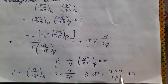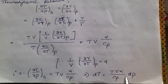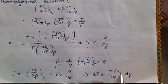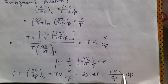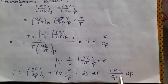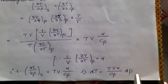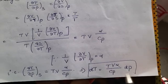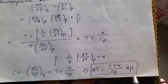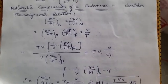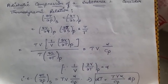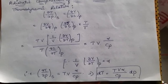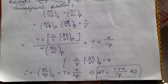If alpha is positive, that means adiabatic increase in pressure results in an increase in temperature. This is the required relation for adiabatic compression of a substance. Hope it is clear to all, thank you.